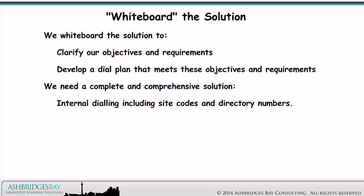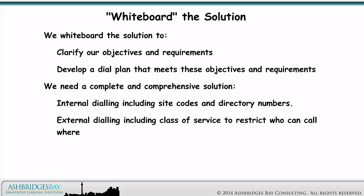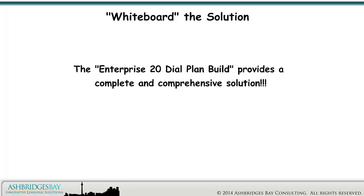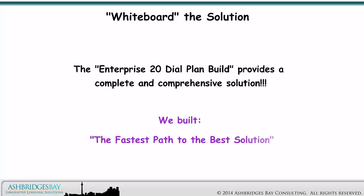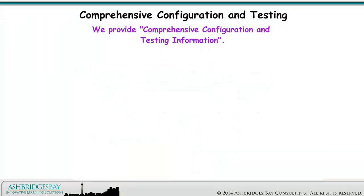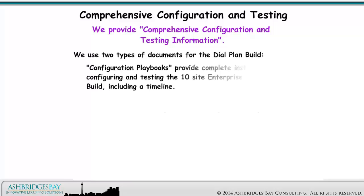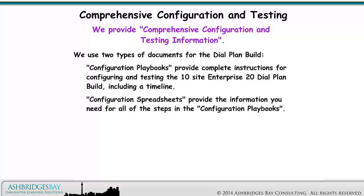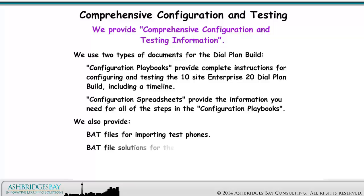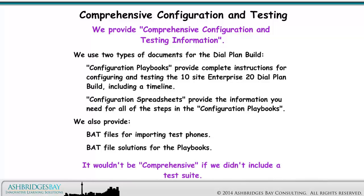We whiteboard the solution to clarify our objectives and requirements, and develop a dial plan that meets them. We need a complete and comprehensive solution covering internal dialing including site codes and directory numbers, external dialing including class of service to restrict who can call where, call forwarding, and mobility. We use two types of documents: configuration playbooks providing complete instructions for configuring and testing the 10-site Enterprise 20 dial plan build including a timeline, and configuration spreadsheets providing the information needed for all steps. We also provide BAT files for importing test phones and BAT file solutions for the playbooks. It wouldn't be comprehensive if we didn't include a test suite.